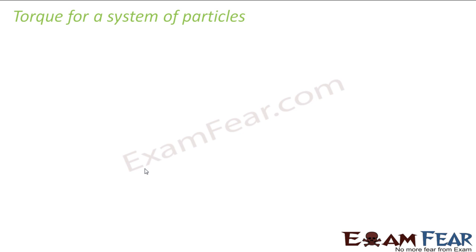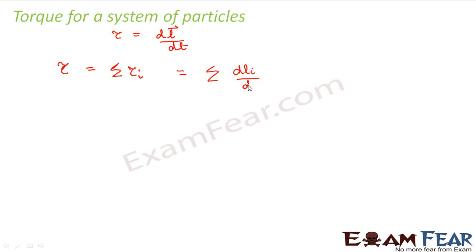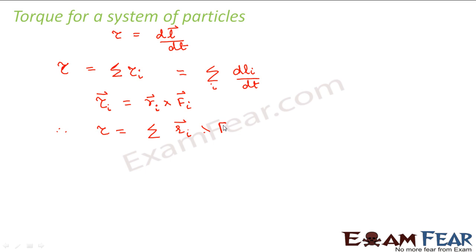Now let us look at the torque for a system of particles. We know that torque is equal to dL by dt — this is what we know from our knowledge from the previous slides. So the total torque of the system will be equal to summation of the torque of each of the particles, which can be written as summation of dLi divided by dt. We also know that torque is equal to R cross F, so the torque of the ith particle equals Ri cross Fi. Therefore torque becomes equal to summation of Ri cross Fi.